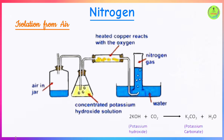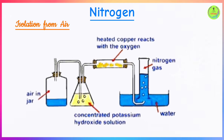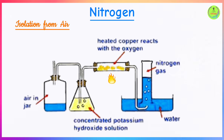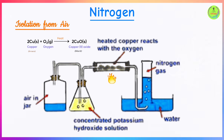The remaining air, now free from carbon dioxide, passes into a combustion tube containing heated copper turnings — small pieces of copper metal. Oxygen, the active part of air, reacts with the heated copper to form copper(II) oxide. You'll observe that the brown copper turnings turn black because copper(II) oxide is a black solid. The remaining gas, mostly nitrogen, is then collected over water.